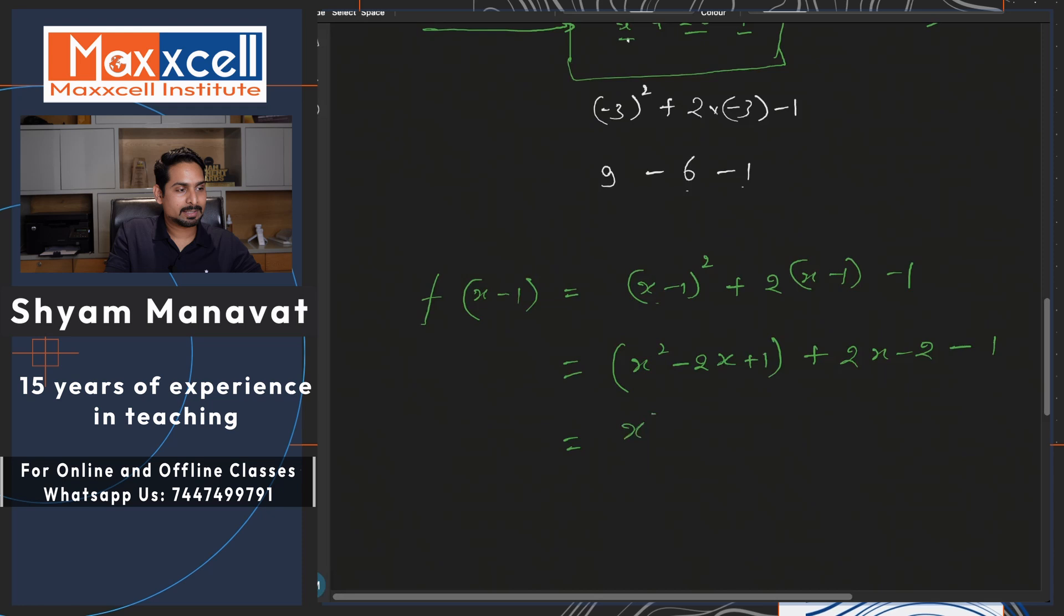Here, simplify this, x square, minus 2x, open the bracket, minus 2x plus 2x, gone. Plus 1, minus 1, gone. So what do you have? You have only minus 2, that is f of x minus 1. That is the outcome, that is the output.